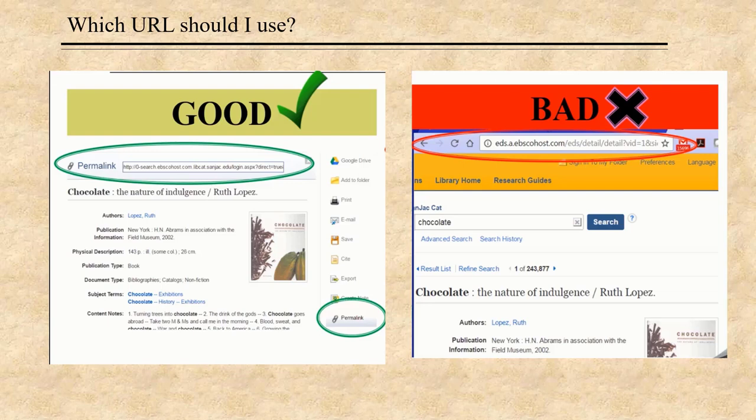Let's talk about database URLs. Library databases are subscription products, and you don't have access to them except through the library's subscription. Your reader may not have access to the same databases you have access to. Using the URL in your browser's location bar will not take your reader to the article you're viewing in the database, even if they have a subscription. Most databases provide permalinks for the convenience of their subscribers — use the permalink whenever possible. The permalink is also much shorter than the URL in the browser location bar.